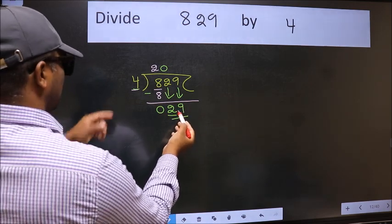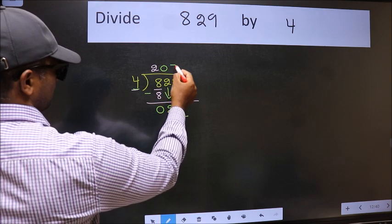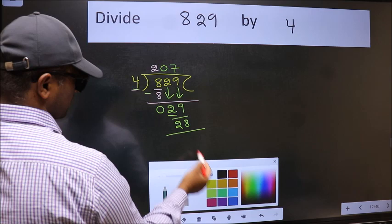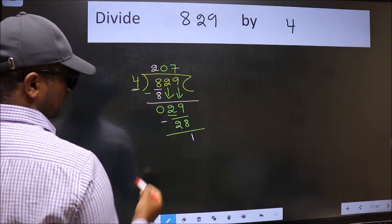A number close to 29 in the 4 table is 4 sevens, 28. Now we should subtract. We get 1.